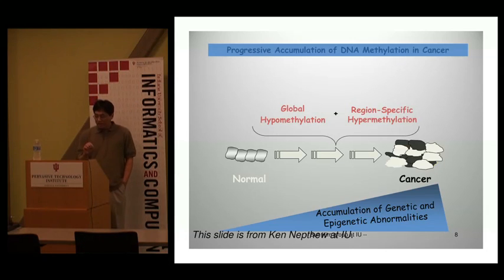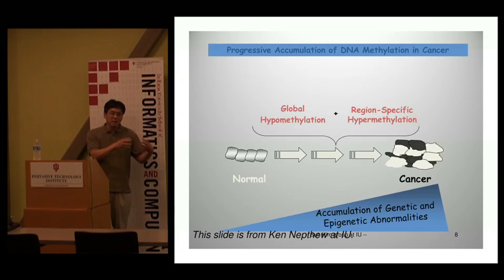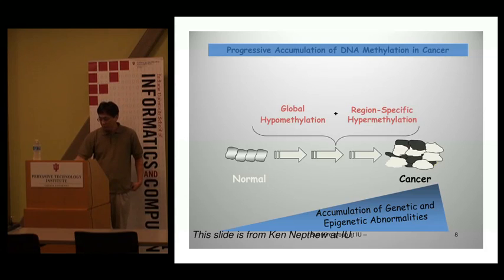This aberrant mechanism accumulates over time. DNA methylation, once acquired, is not transient — it accumulates. Starting from normal cells, as cancer becomes worse and eventually metastasizes, DNA methylation actually accumulates, with more and more methylation occurring in region-specific regions. That's why it's a heritable change — once you acquire it, you generally keep it.